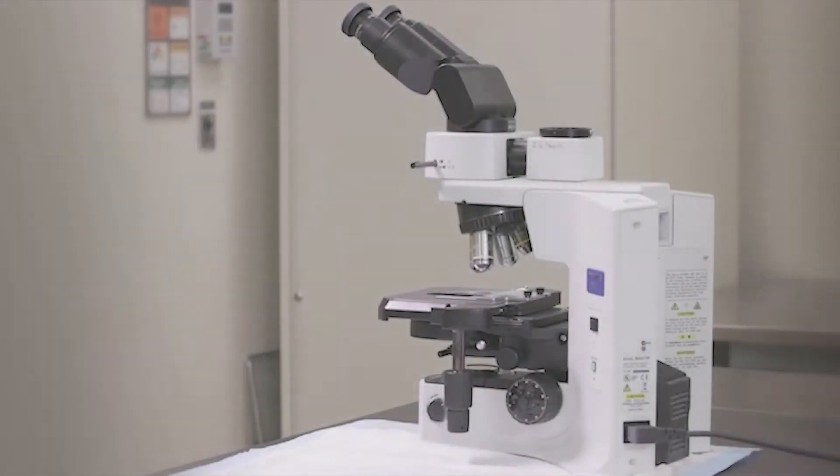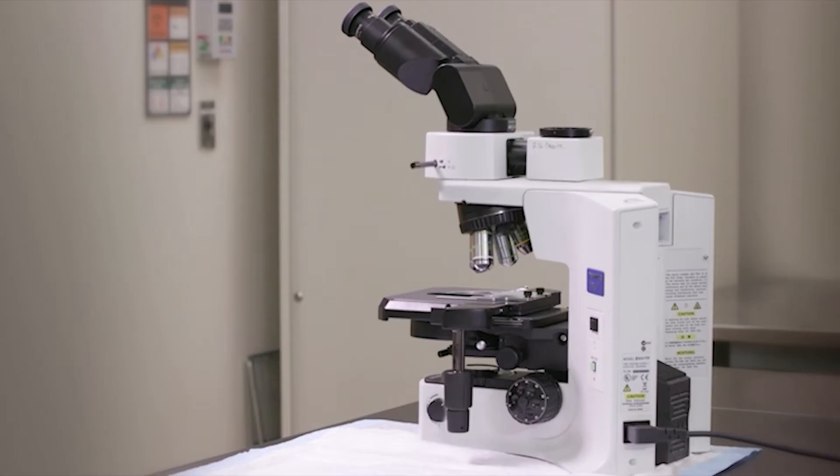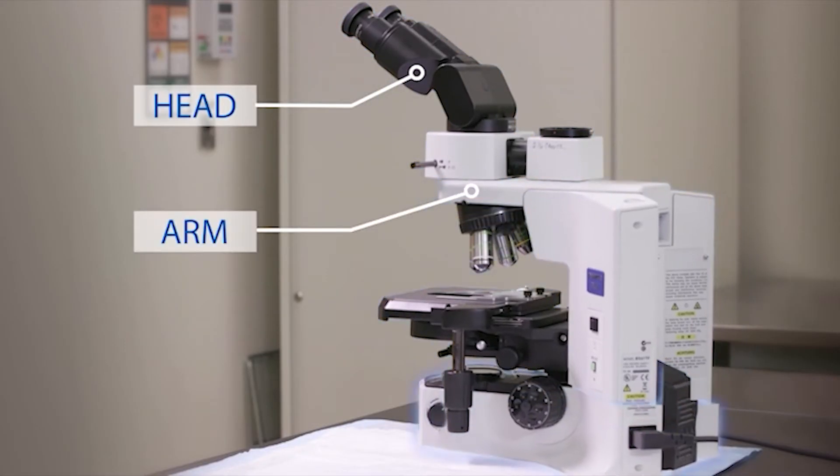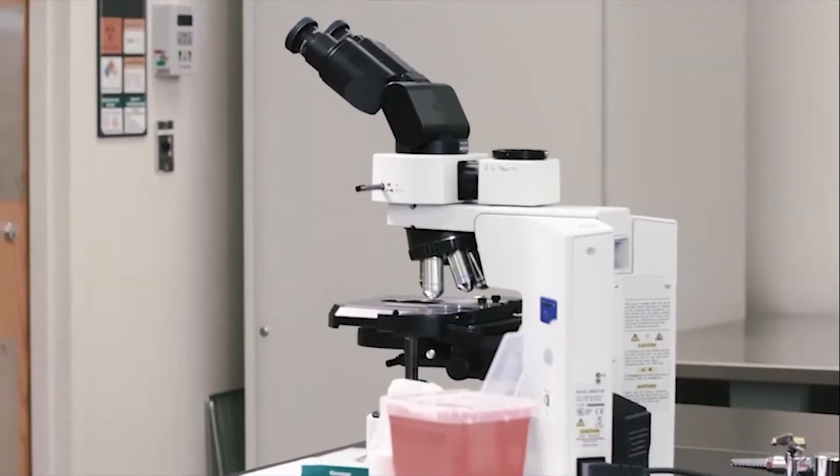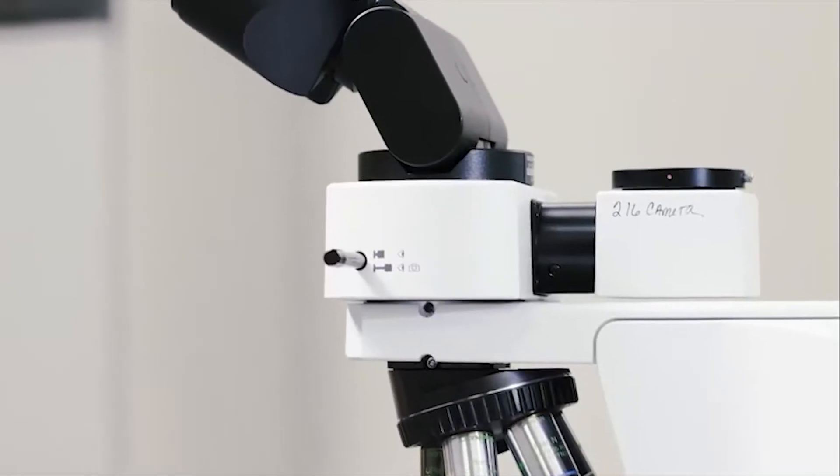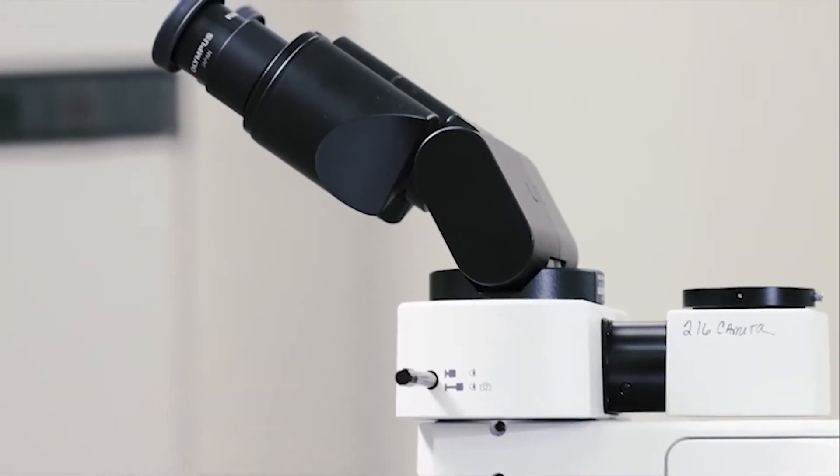The microscope consists of three main sections: the head, the arm, and the base. Each section contains several important components of the microscope. The first section of the microscope is the head.